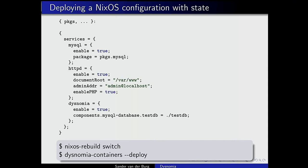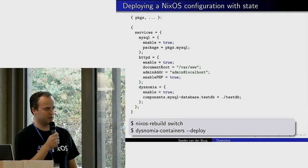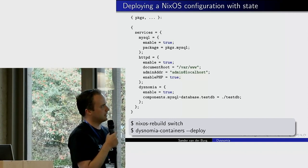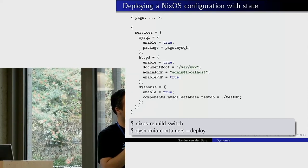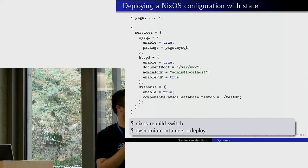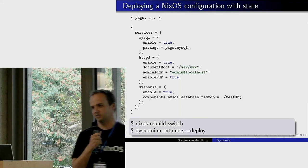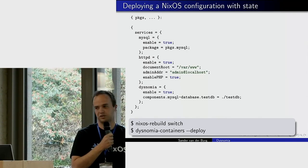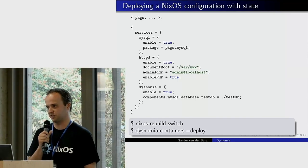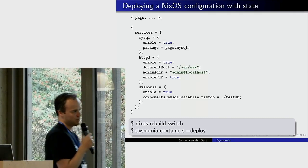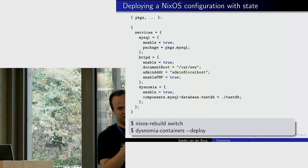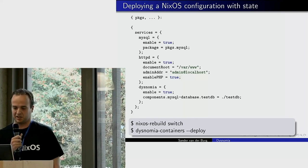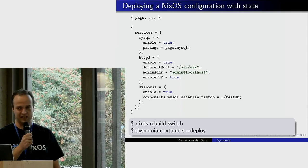You can use Dysnomia as an independent tool, but it's even more interesting integrated with NixOS. You can add a Dysnomia service configuration, enable Dysnomia, and specify all the databases you want to deploy with references to their initial state configurations. When you deploy such a NixOS configuration with nixos-rebuild switch, you can then run dysnomia-containers deploy, which transparently deploys all the databases in your NixOS configuration. The Dysnomia module also transparently generates the key-value container configuration files for MySQL and Apache, so deployment of state becomes quite convenient.